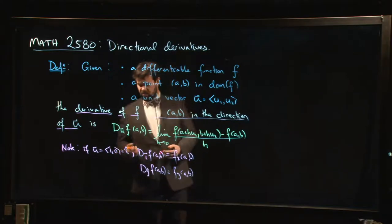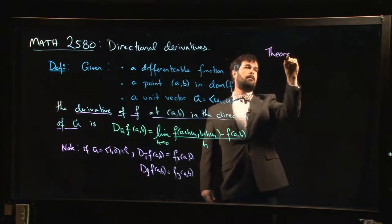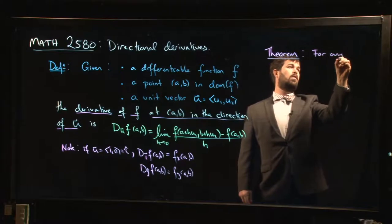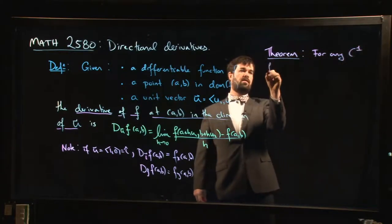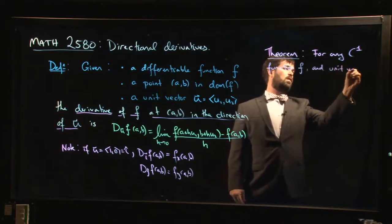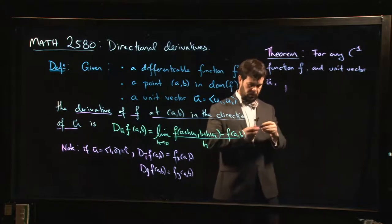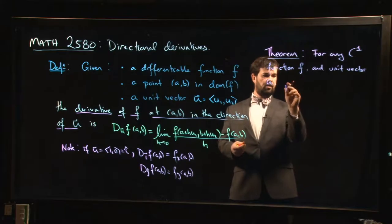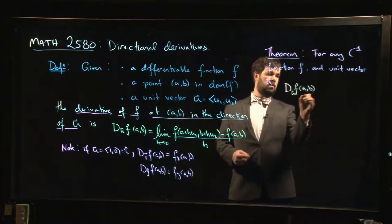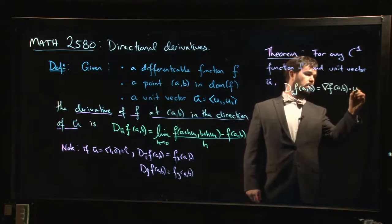Of course, nobody likes using a limit definition to calculate derivatives, so you want to find some better way of doing that. And fortunately there is a theorem. The theorem says this: for any continuously differentiable function f and for any unit vector u, we have the following formula. Let's switch up our colors, why not. The derivative of f in the direction of u at (a, b) is given by the gradient of f at (a, b) dot product with u.